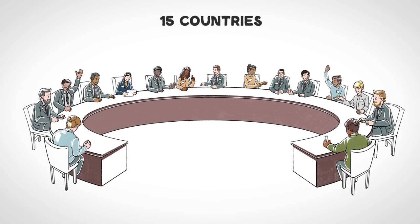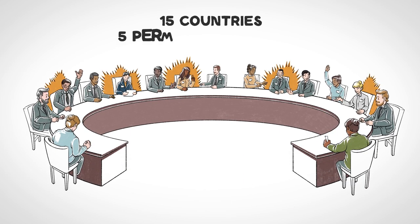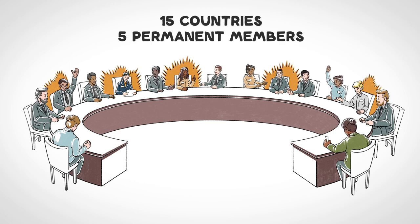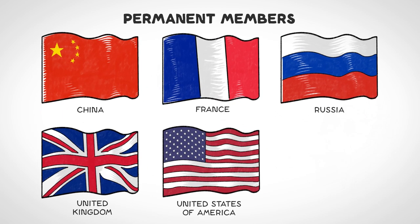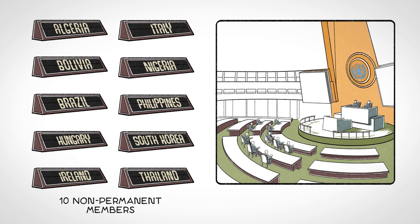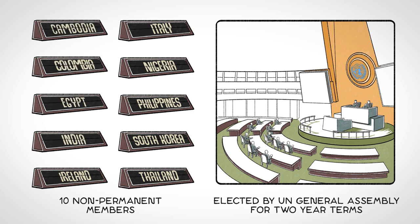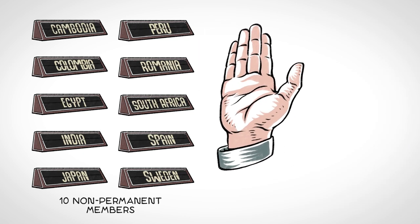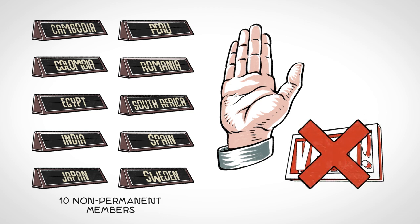Fifteen countries sit on the Council. Five are permanent members — they're always on the Council, and they have the power to veto any Council decision. The other ten countries are non-permanent members, elected by the UN General Assembly for two-year terms. They can vote just like the five permanent members, but they do not have veto power over Council decisions.